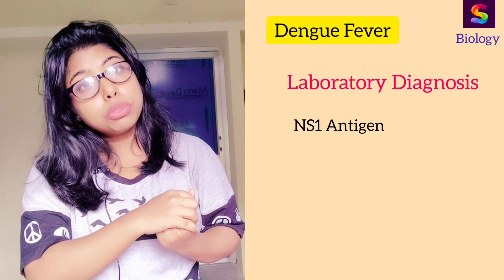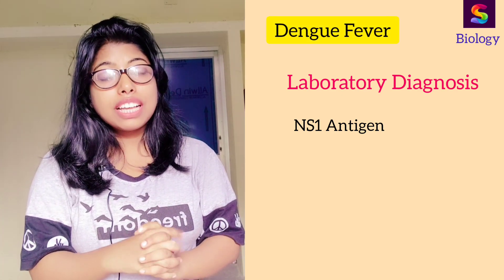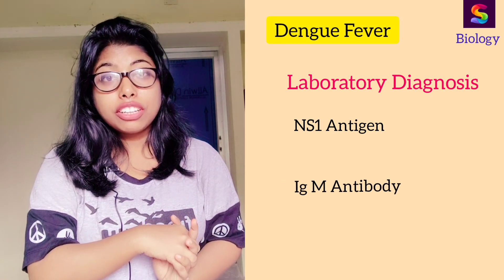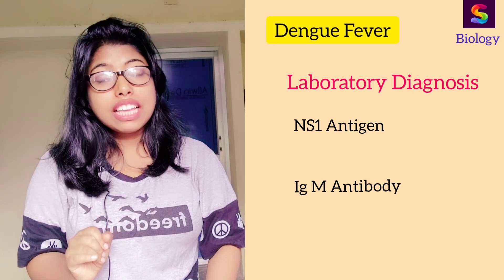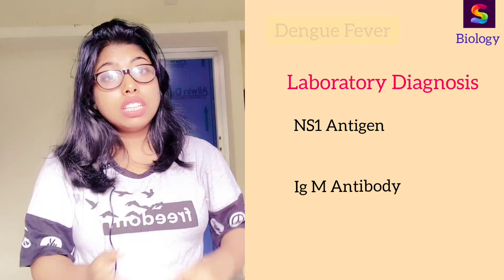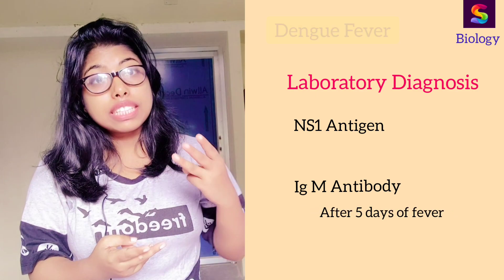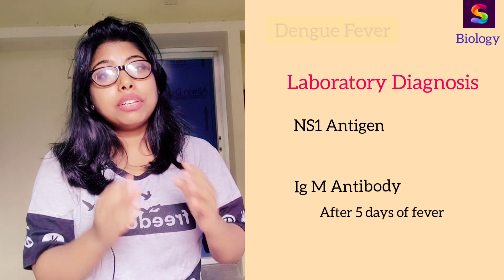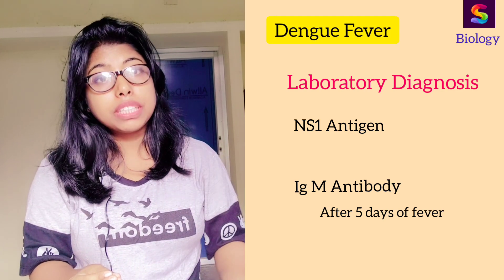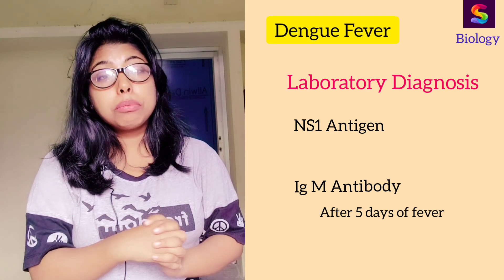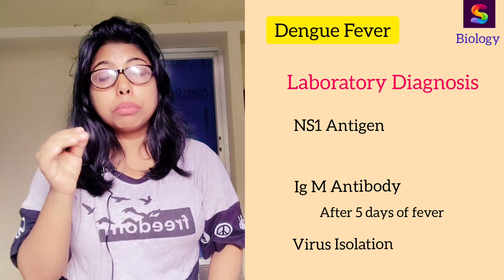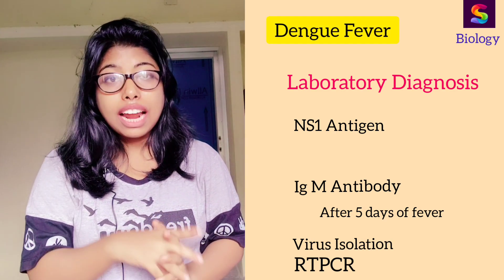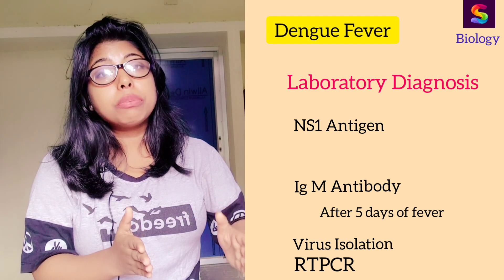After 4 to 5 days of fever, we look for the IgM antibody. If you are dengue positive, the IgM antibody will be detected after 5 days of fever and will continue to remain positive for 3 months. This antibody test is called ICT — the immunochromatographic method. We can also go for RT-PCR, which stands for Reverse Transcriptase Polymerase Chain Reaction.